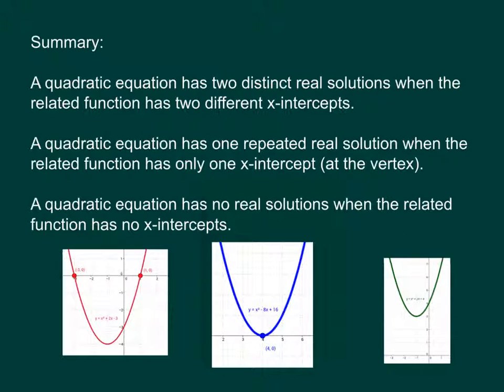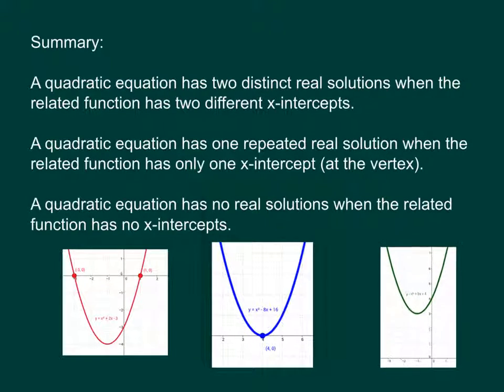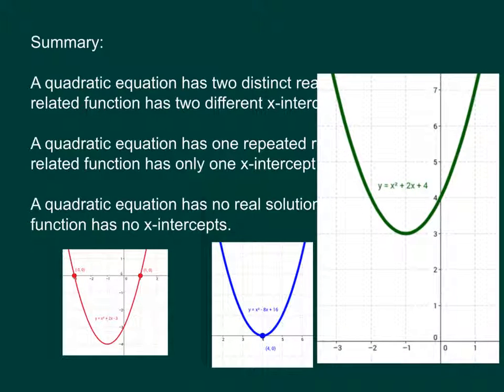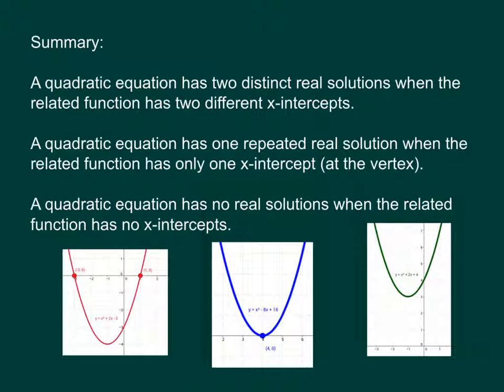And then the third case is that a graph of a parabola has no x-intercepts, like this example here. Then that quadratic equation is going to have no real solutions. And that pretty much wraps up everything you need to know about section 9.2. There are some applications we're going to look at, but that is all you need as far as new material goes. Hope this was clear.